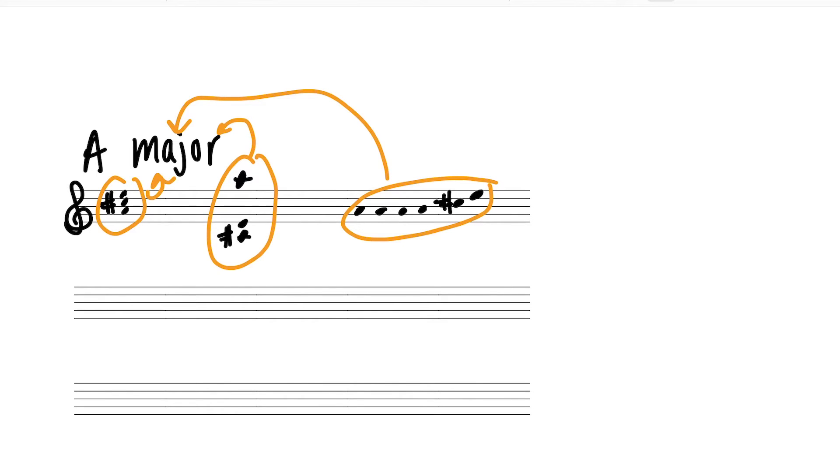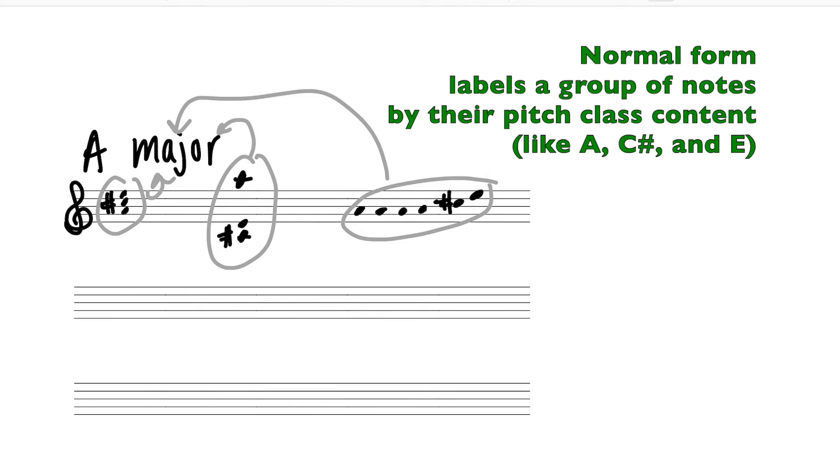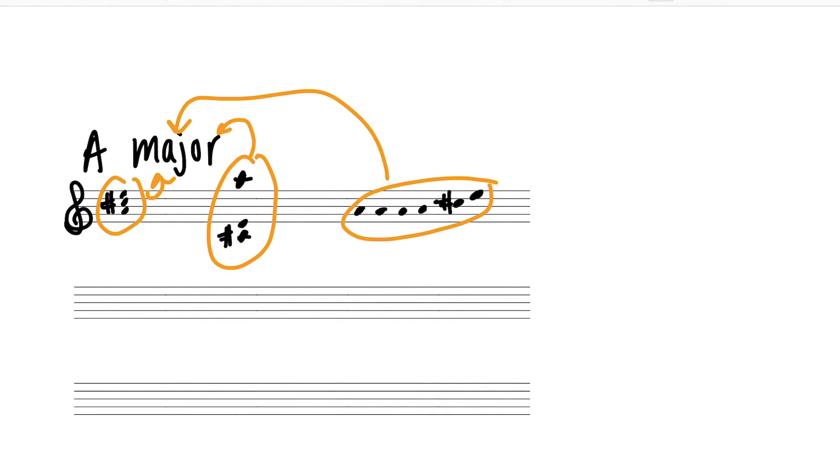But all of these sets would get the same label of A major. So normal form is kind of like labeling something A major. It's a way of labeling a group of notes and unifying them according to their pitch class content and not caring so much about the spacing between the notes, the order in which they appeared in the music. Normal form is the same thing but for non-triadic entities.